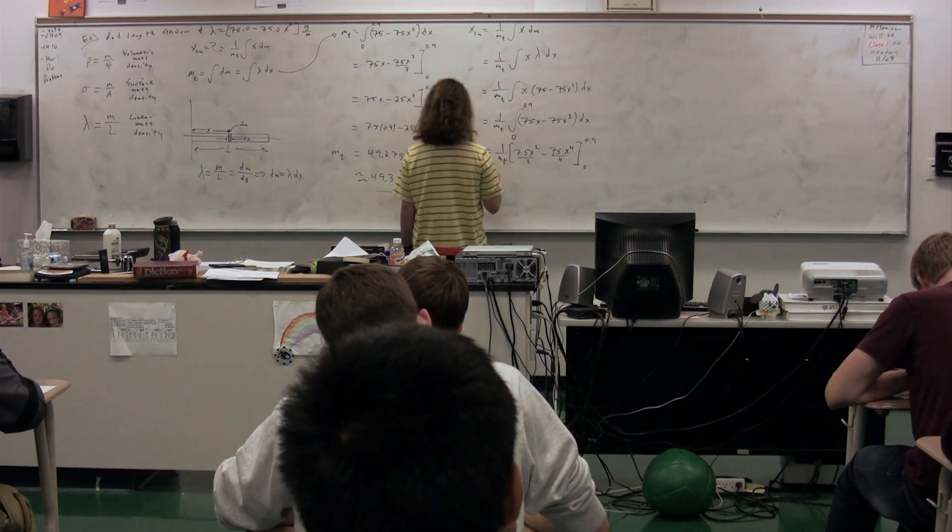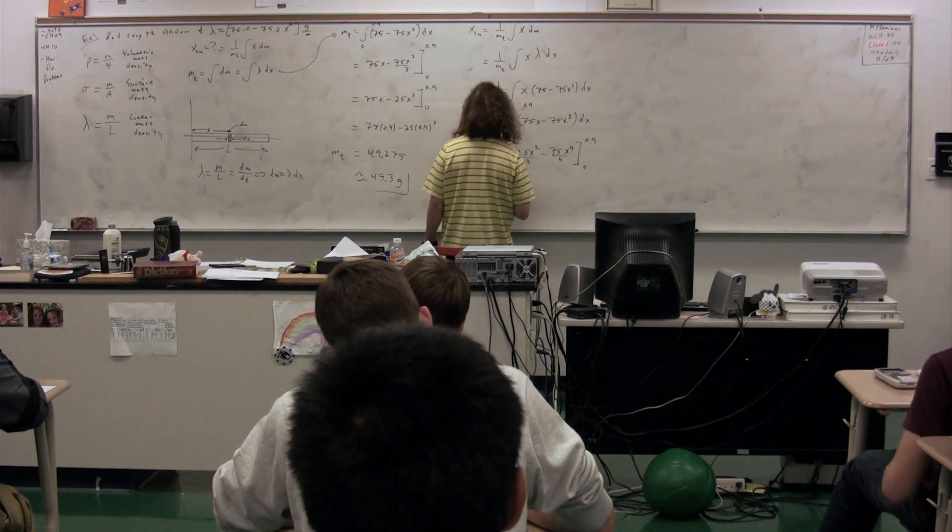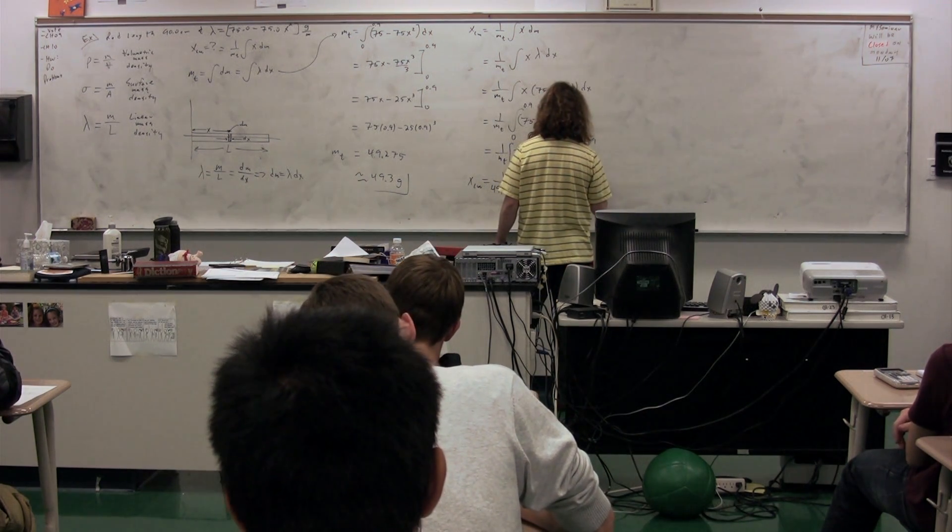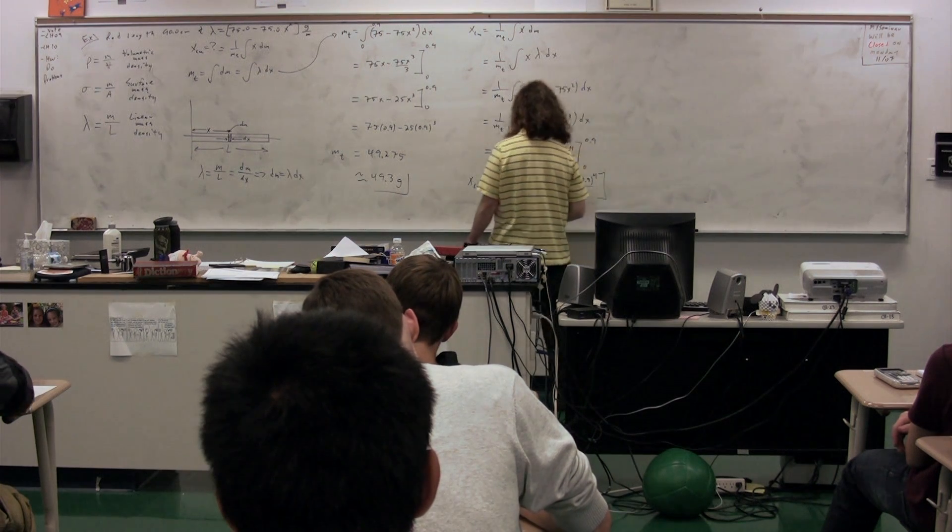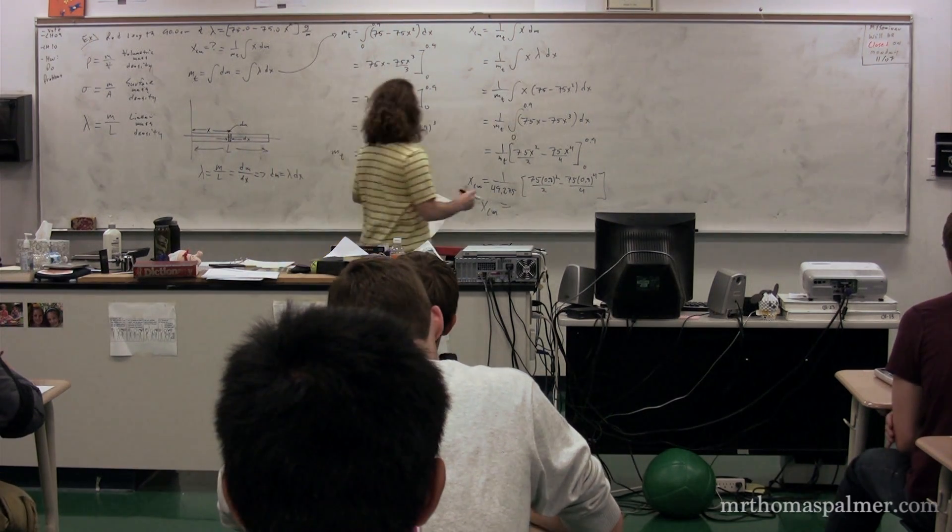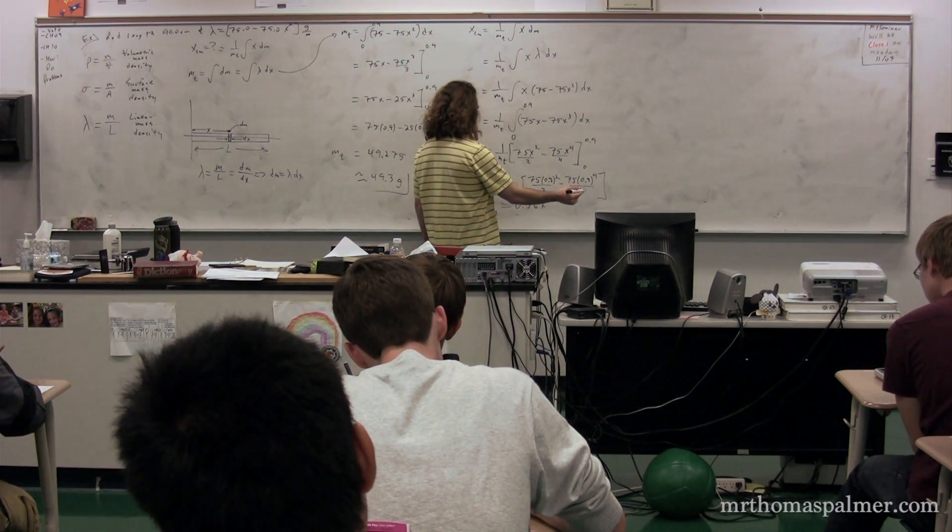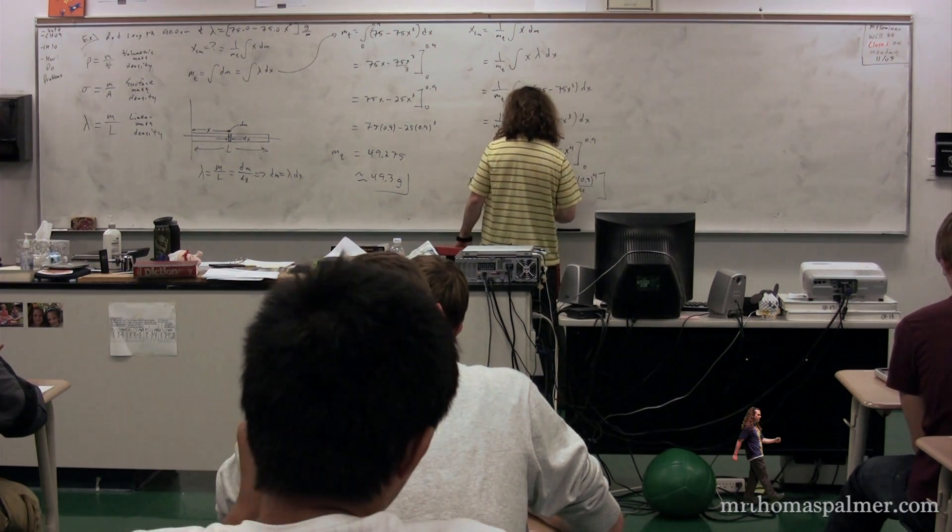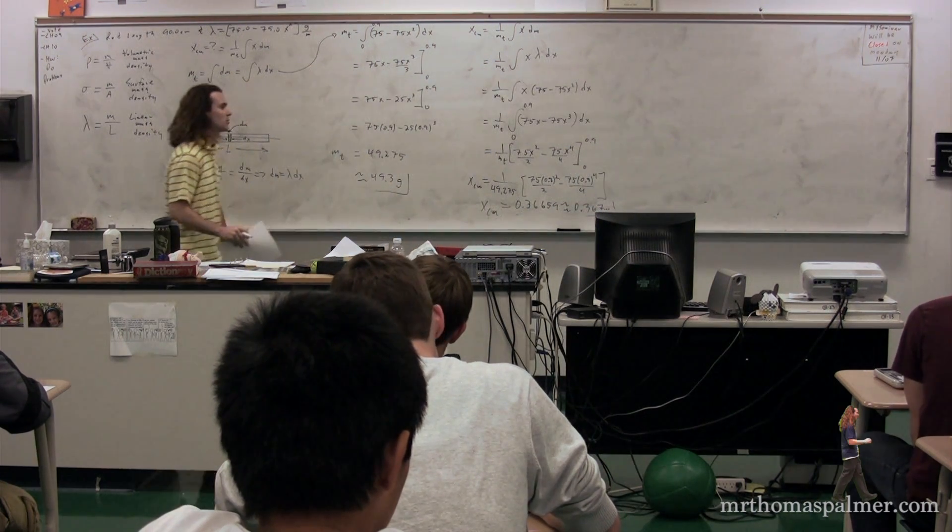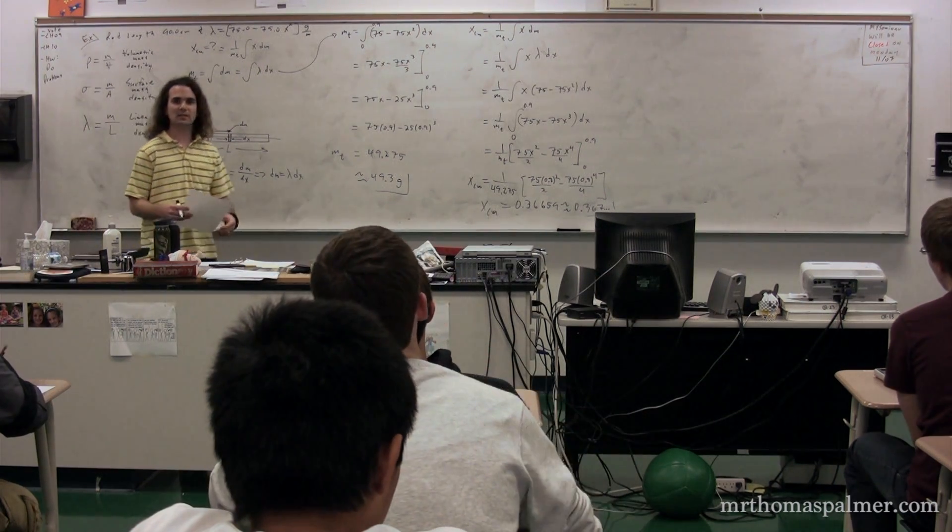Great. So, then, we actually have all the numbers we need. The x center of mass is going to be equal to 1 over the mass total, which was 49.275 times 75 times 0.9 squared over 2 minus 75 times 0.9 to the 4th power over 4. The x center of mass is 0.367. So, with sig figs, 0.367 meters. And, as you said, we do get meters because it was in grams per meter. And, if you look, that makes sense from what we said before. 45 centimeters would be halfway. So, this is slightly less than halfway.